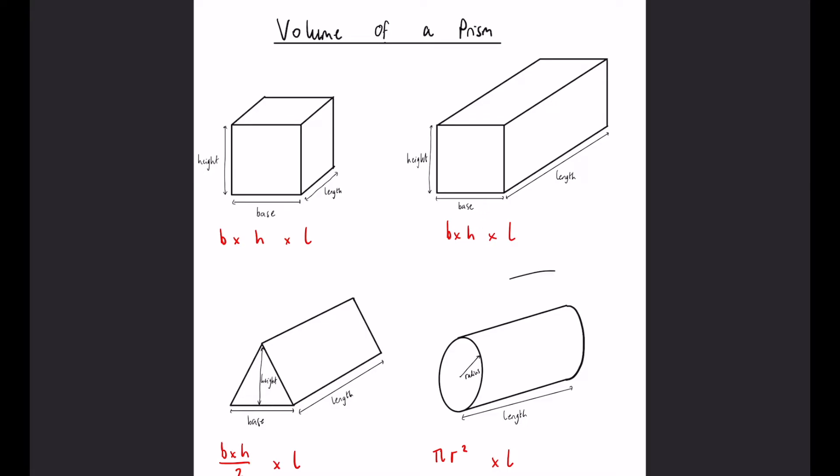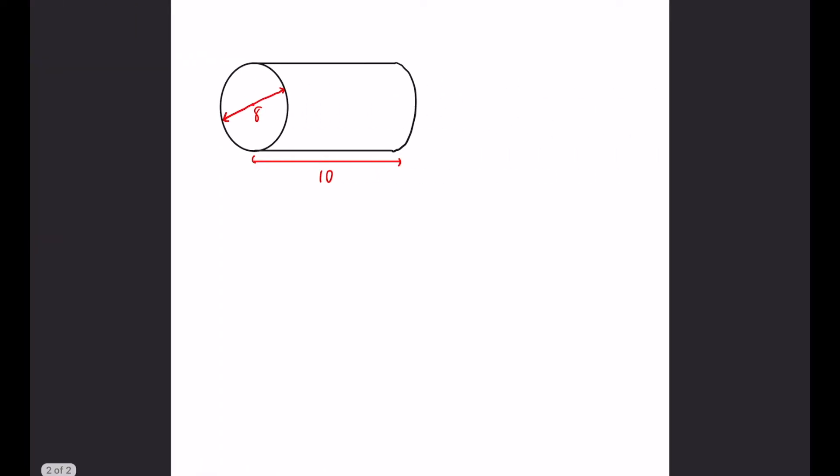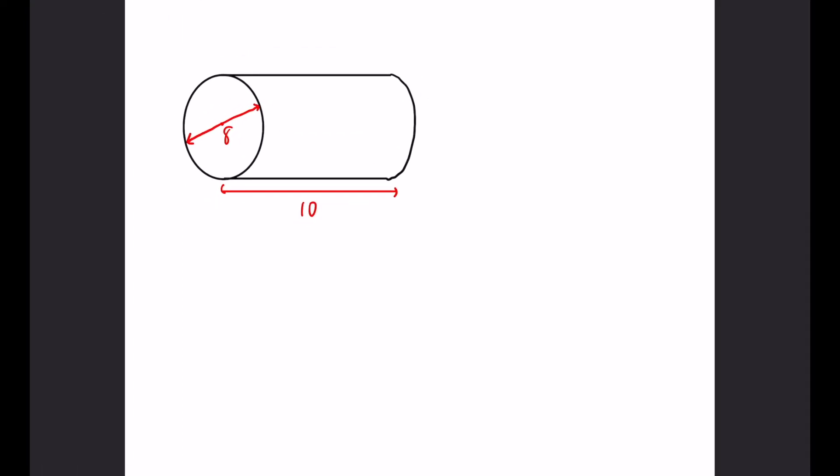So I'm going to take the cylinder as our example, as it is probably the hardest out of the four. You can see here we have a cylinder. Now, be careful with the labeling—we have a diameter of 8 and a length of 10.